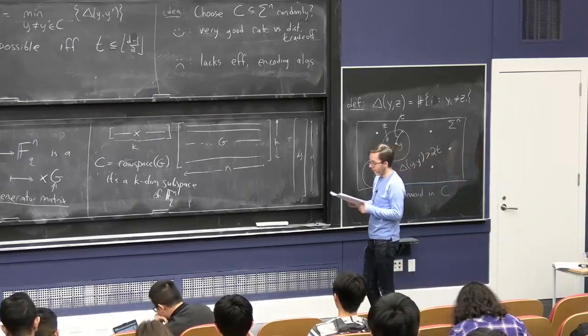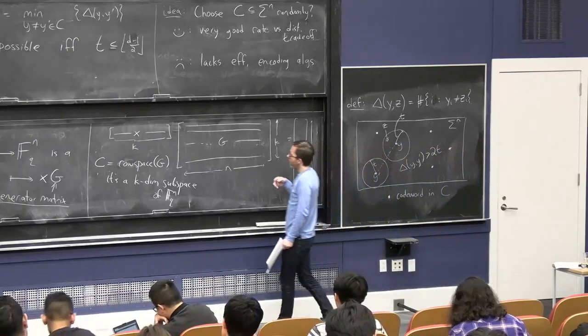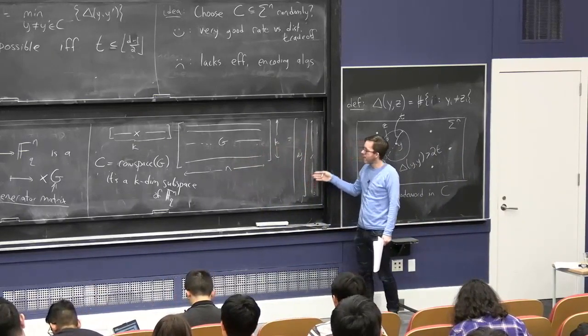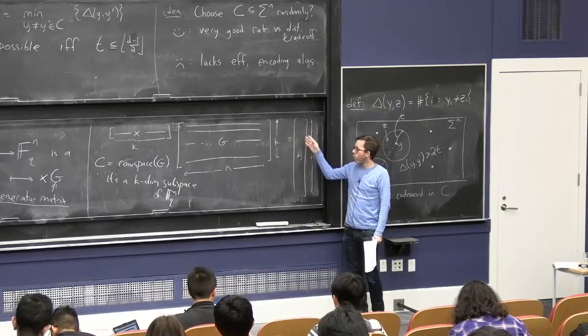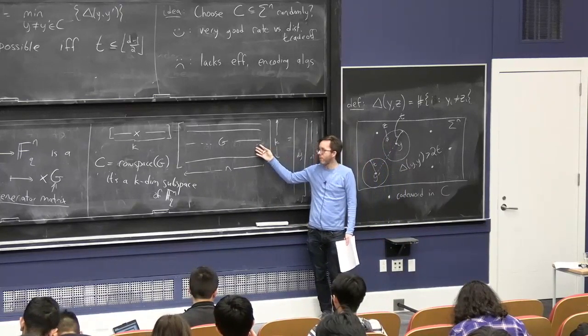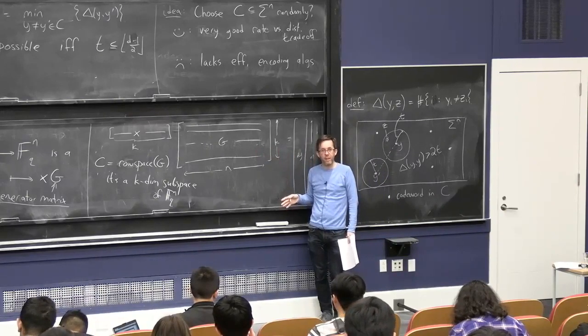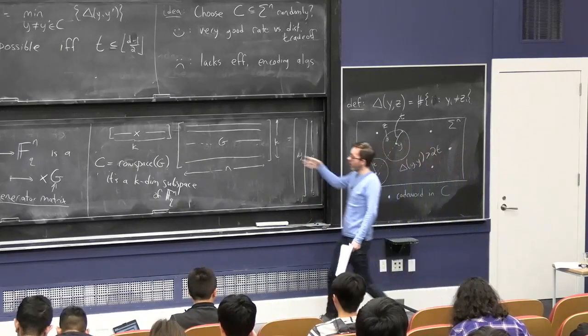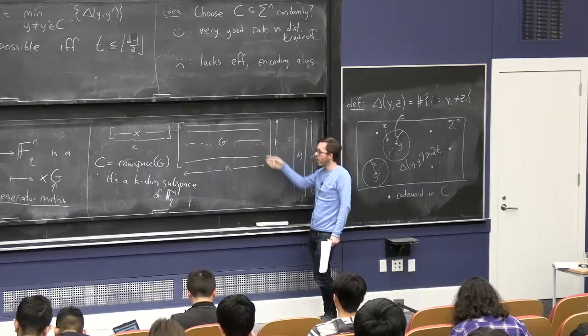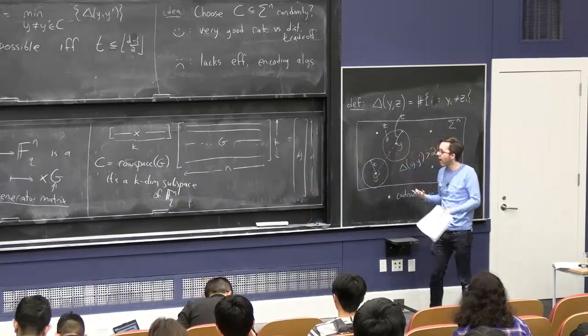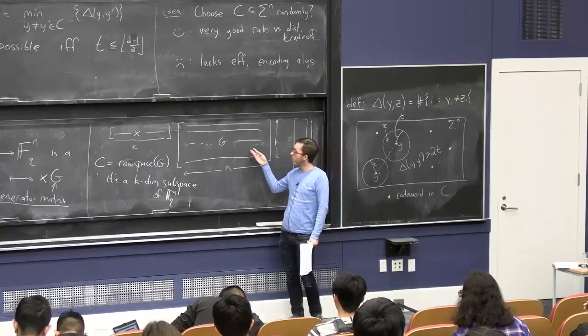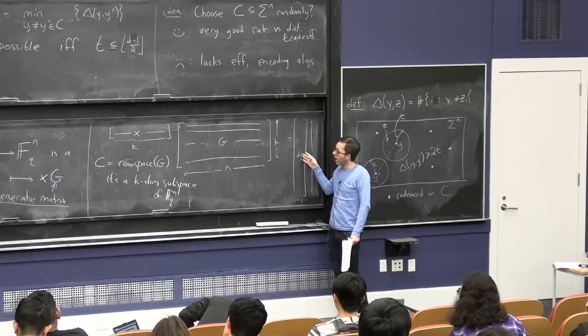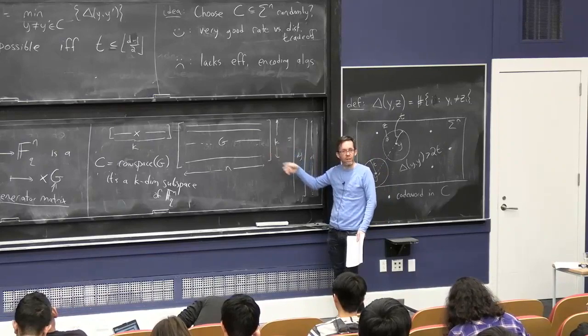What about decoding? In general, the task of given a generator matrix G and received word z, finding the y in the row space of G closest to z, is NP-hard. But for some nice codes, or specific generator matrices G, this task is in P. We'll design error correcting codes with properties that make finding the closest string in the range of G efficient.